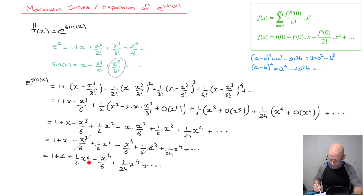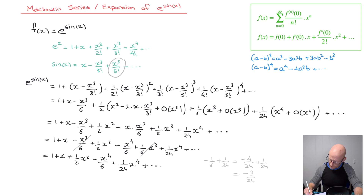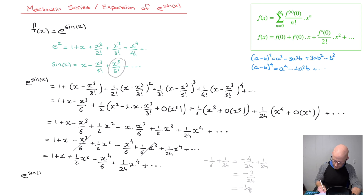All that's left is to gather the two x⁴ terms. We have -1/6 + 1/24, which equals -4/24 + 1/24 = -3/24 = -1/8. So the final answer is: e^(sin x) = 1 + x + (1/2)x² - (1/8)x⁴ + ...